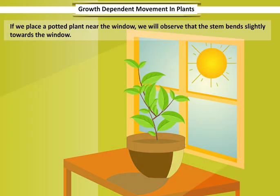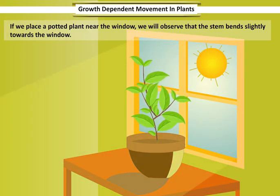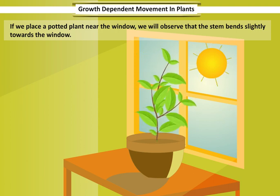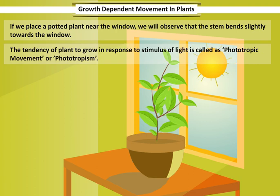If we place a potted plant near the window, we will observe that the stem bends slightly towards the window. The tendency of a plant to grow in response to the stimulus of light is called phototrophic movement or phototropism.